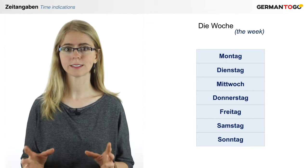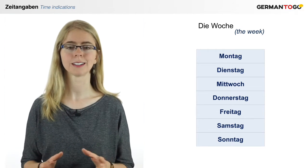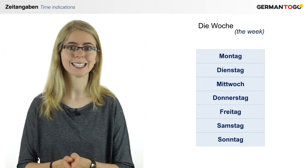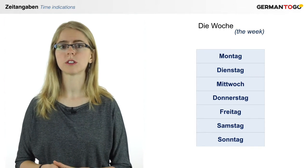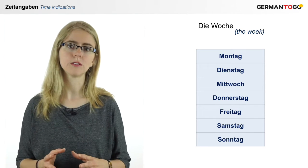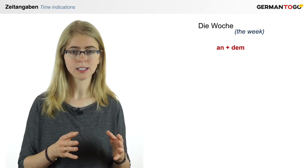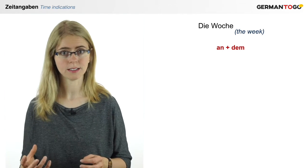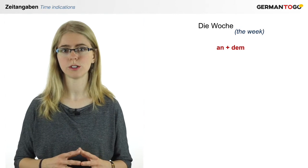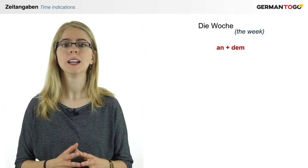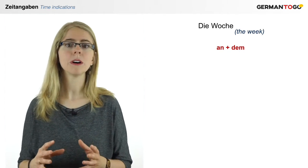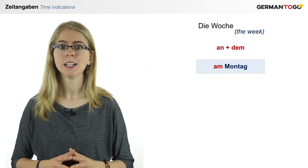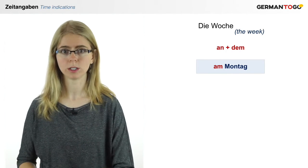In Germany the week starts on Monday — Montag. All days of the week are masculine because der Tag is masculine. So if you want to say 'on Monday' you have to use the preposition an plus dem, which is the dative of der. An is a preposition always used with the dative case. So an dem Montag, contracted to am Montag. On Monday is am Montag.